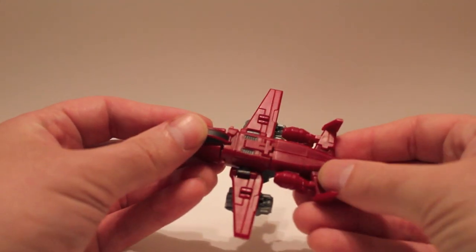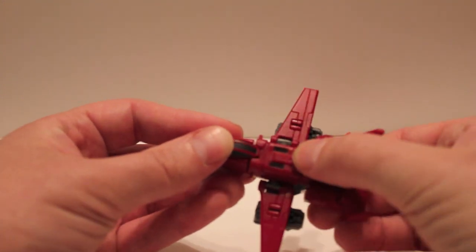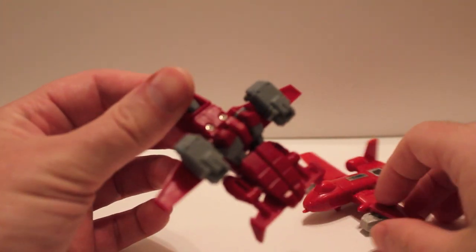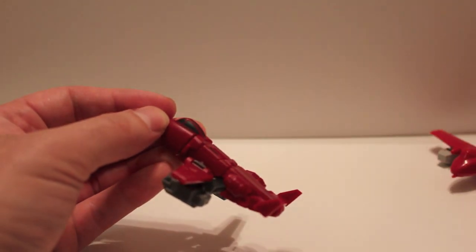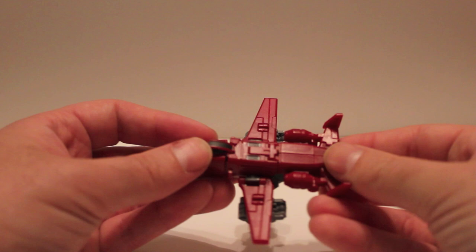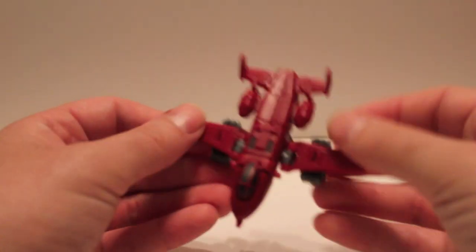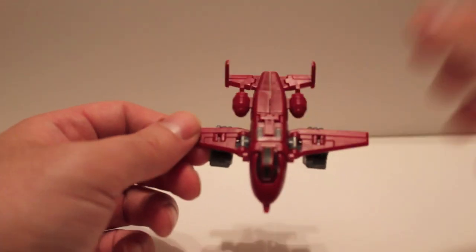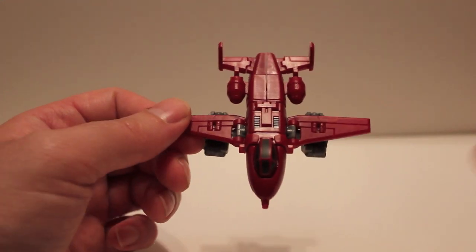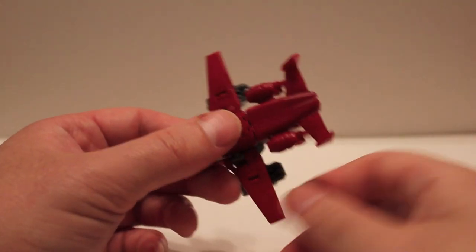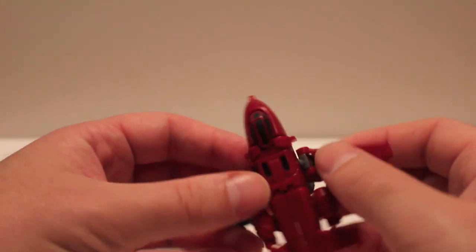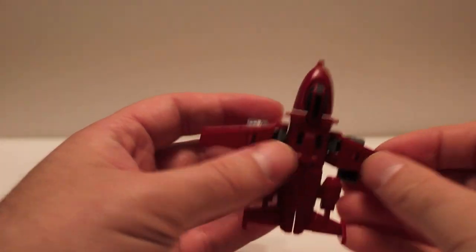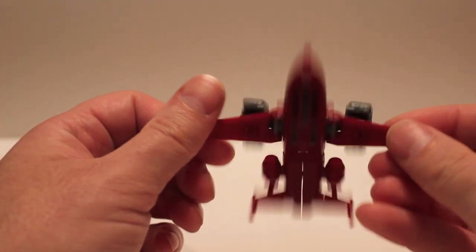It's also a lot different for the transformation. It's a lot more complex underneath, very similar. As you saw in the G1 Power Glide review, that's basically pull this out, rotate the wings, pull the arms out and twist the head and you're done. This guy's a little bit more complicated, actually a lot more complicated.